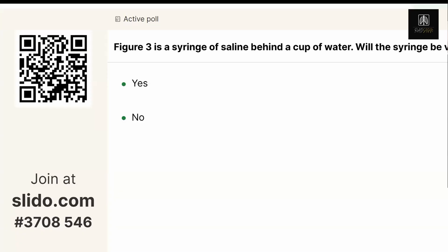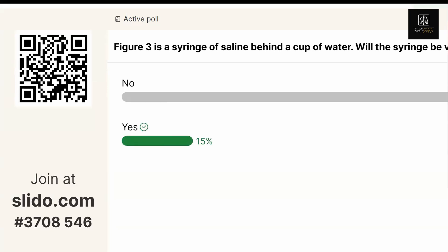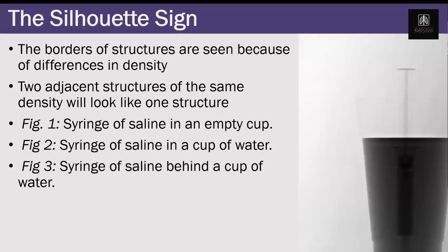Now I took the syringe out of the cup of water and put it behind the cup. Most people said we would not be able to see the syringe. But here it is — the syringe is now surrounded by air again. The reason we can see it is because the syringe, which is water density, is bordered by air. Previously it was inside the cup and looked like one big blob, but now surrounded by air we can see it again.